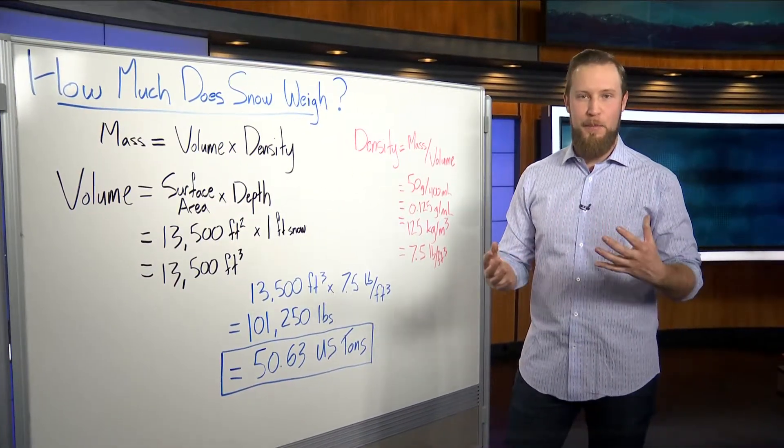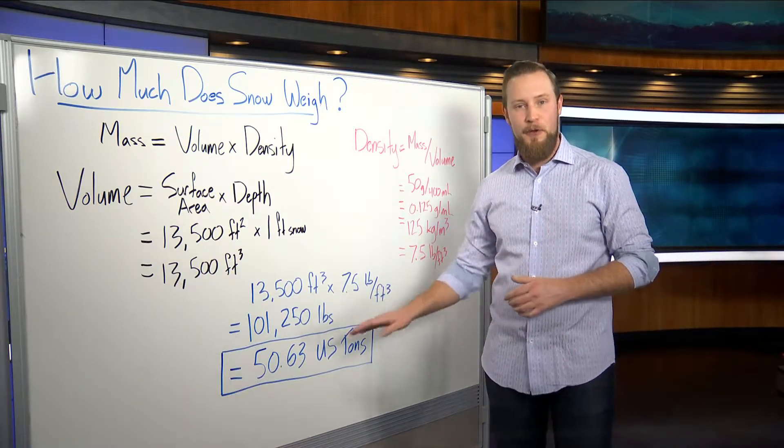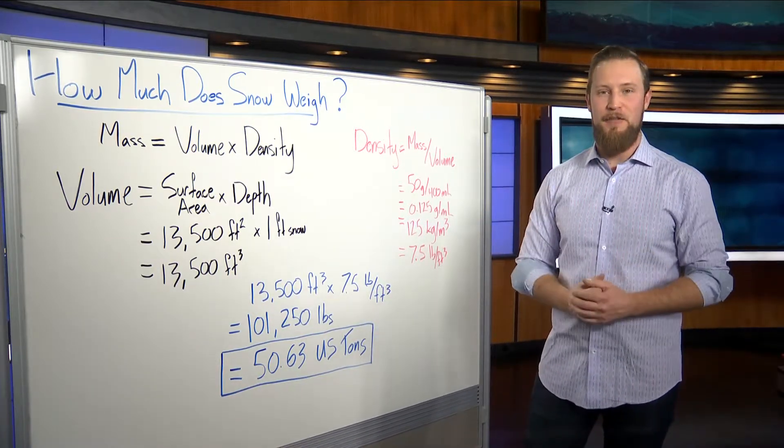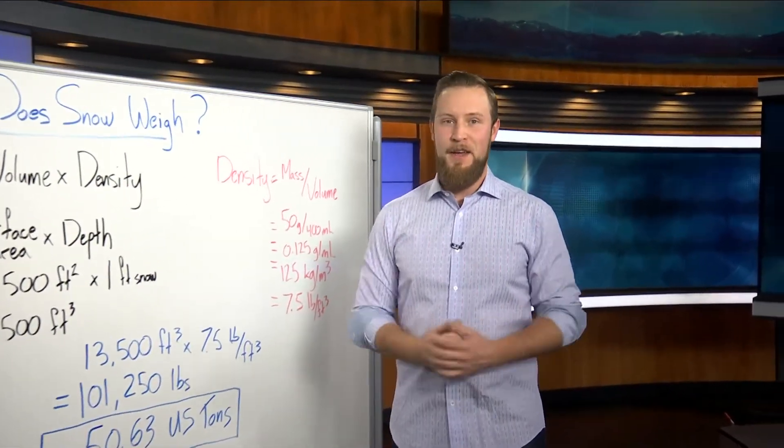Converting that to tons is a number that people know how to work with and means a little bit more to us. That is roughly 50 U.S. tons of massive snow sitting right here on our roof at Q2. Now how's that for some winter impacts?